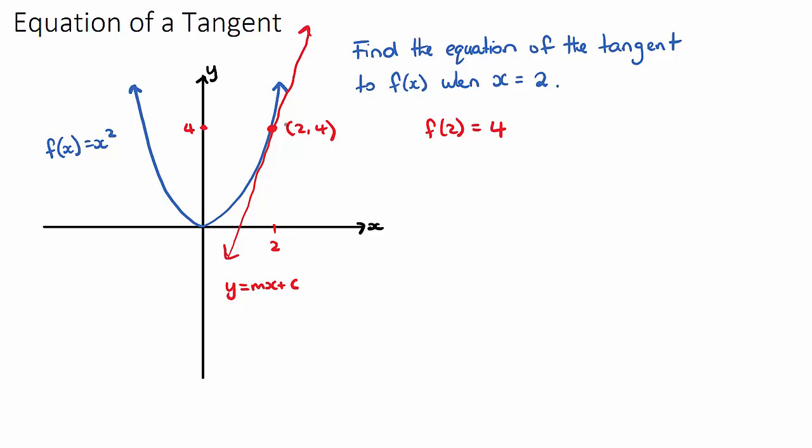Now, the steps to find the equation of a tangent are, we first need to take our function and find the derivative. So f dash of x, our first derivative, will be 2x.